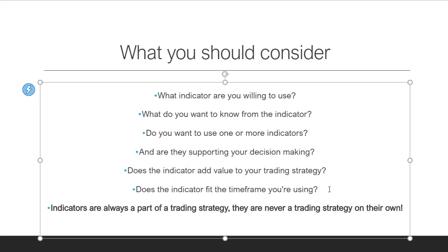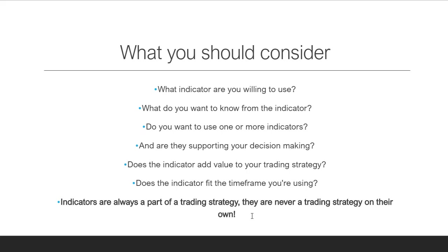Does the indicator fit the time frame you're using? On a weekly chart, when price approaches a 200-day moving average, it's not going to just blow through that level — it's definitely going to bounce, reverse, correct, or consolidate. But if you use the 200-day, 50-day, or 20-day moving average on a five-minute chart, it's a totally different picture, just like support and resistance levels get broken more easily on smaller time frames.